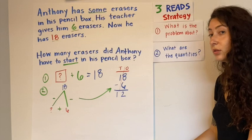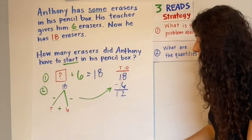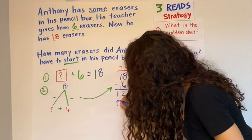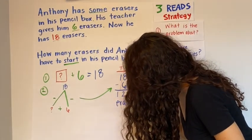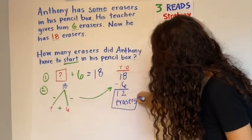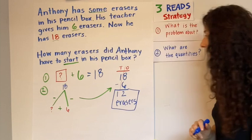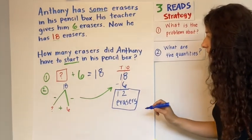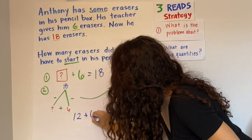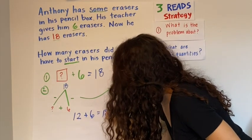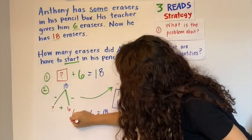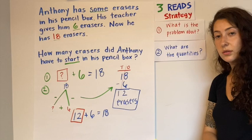So my answer to this problem is 12. 12 what? Yes, 12 erasers. Make sure you label it, 12 erasers. And then I want to box my answer. So now I know that 12 plus six equals 18. And our friend Anthony started with 12 erasers.